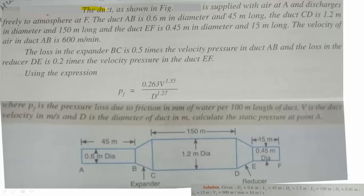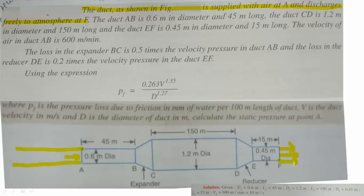The duct as shown in figure is supplied with air at A, so air is entering from point A. It discharges freely to atmosphere at F. The duct may be long or a fan might be here — that is not given — but at location F it is open to atmosphere, so we consider gauge pressure to be zero at this location.